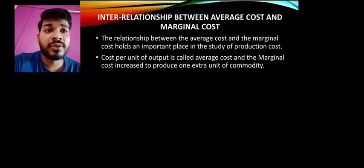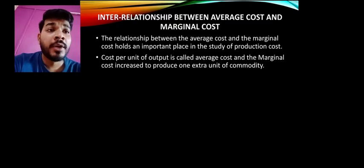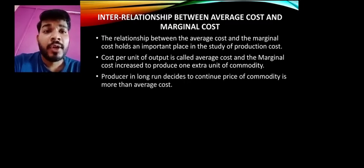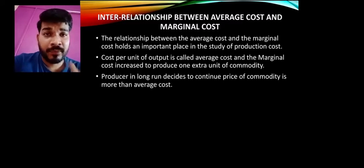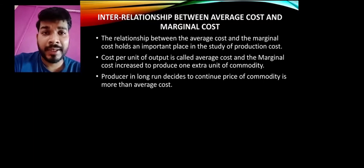Now let's study the interrelation between average cost and marginal cost. This is an important topic from the exam point of view. For example, suppose you are a producer who has made a product whose cost is 8 rupees, and it sells in the market for 10 rupees. So you are getting 2 rupees as profit.